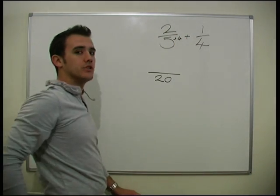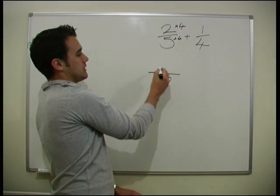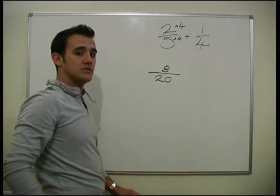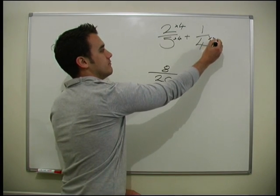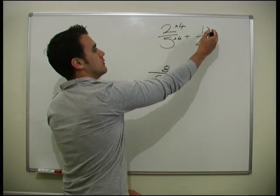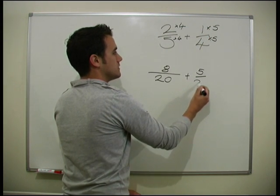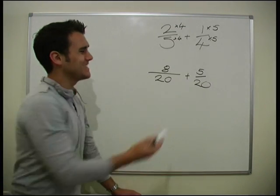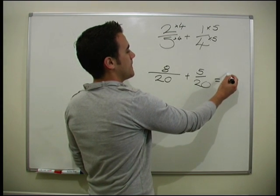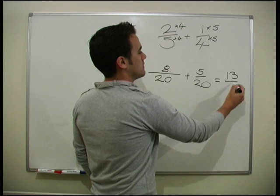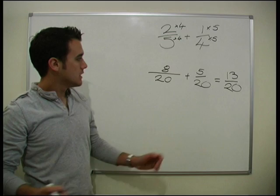So we need to do the same to the number on the top to make sure this fraction stays the same. So whatever we do to the bottom, we do to the top. So we've got 20 here, we're going to get 8 on the top. And then we need to add that on. So what do we do here? We times the 4 by 5. So we're going to do that on the top as well. So we're going to get 5 over 20 here. We actually see that 5 goes into 20 four times, so it is the same as a quarter. So now we just add them together and we find it equals 13 over 20. So that's very straightforward.